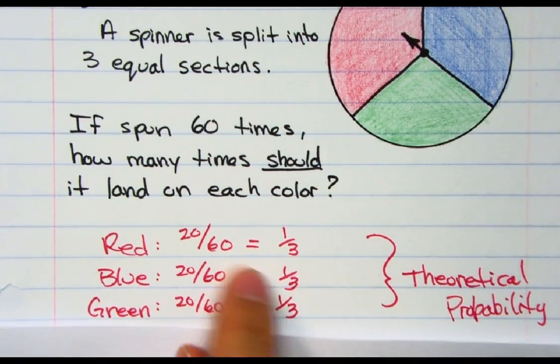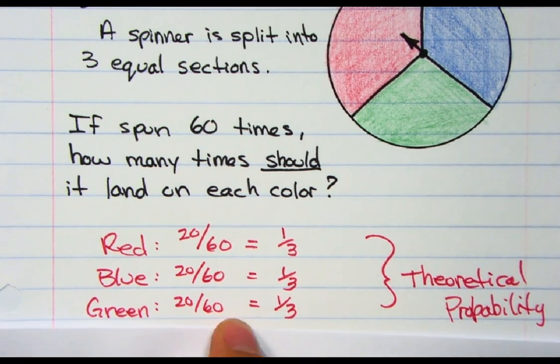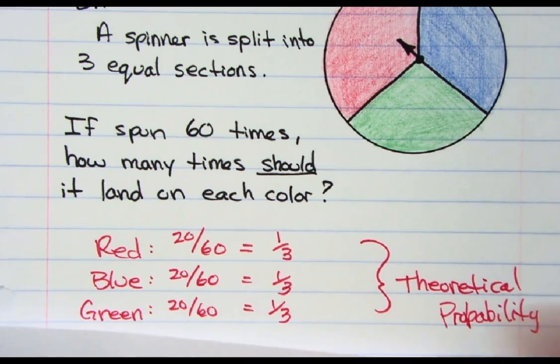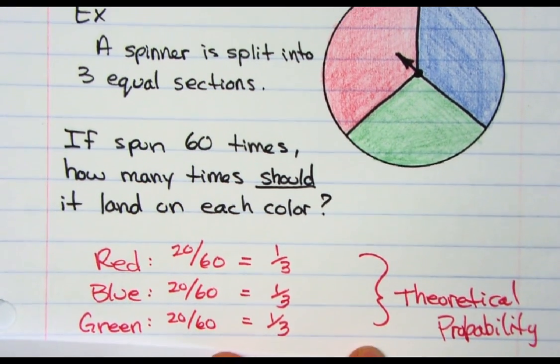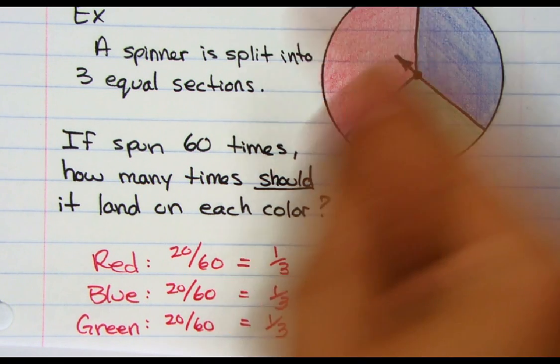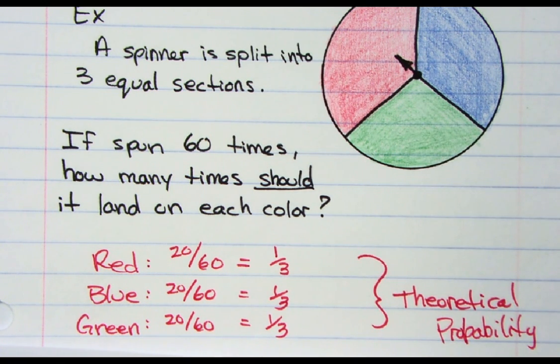In theory, this is theoretical because you're saying the numbers match. It's a third, it should be equal chances each time. That's in theory.